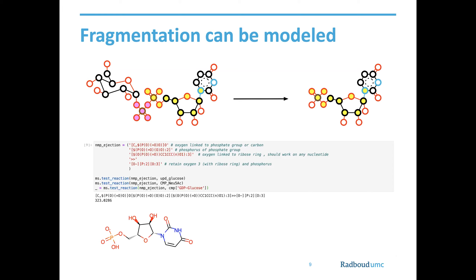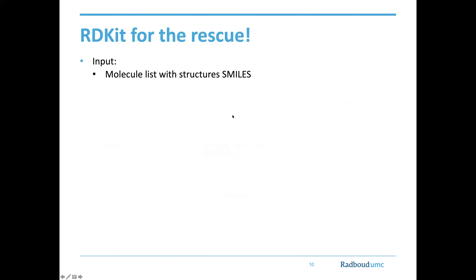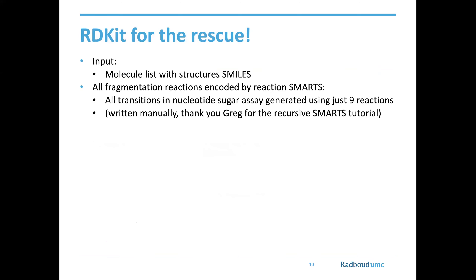Here is an example I wrote: a monophosphate ejection reaction that just breaks the bond between the two phosphate groups and generates a nice fragment ion. I didn't put much selectivity here, so this actually works with any nucleotide sugar, whether it's cytidine, adenosine, or guanosine-based. So we wrote a software tool that takes a list of molecules with SMILES structures as input, and all fragmentations for this nucleotide sugar assay are basically encoded by nine reactions.